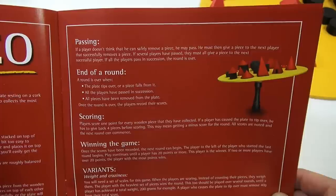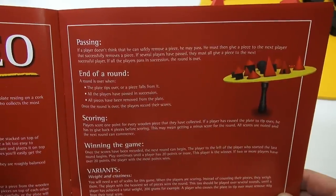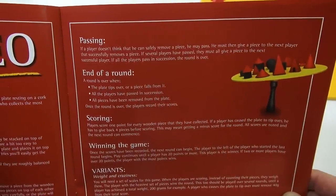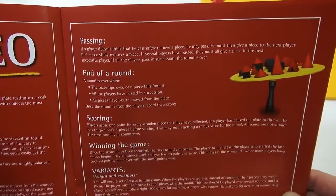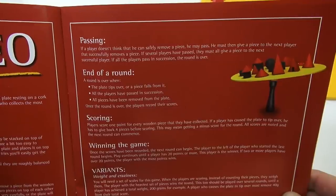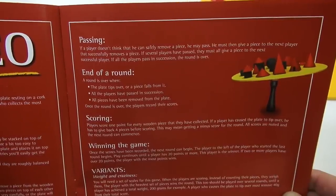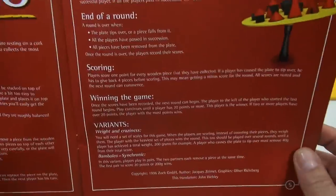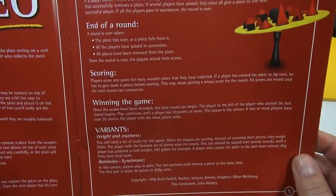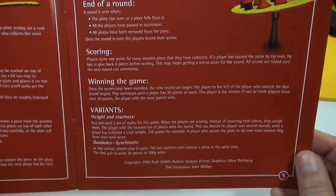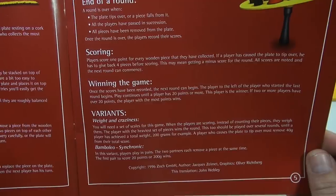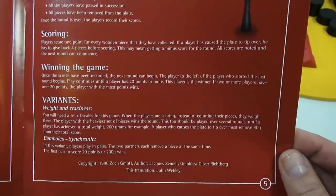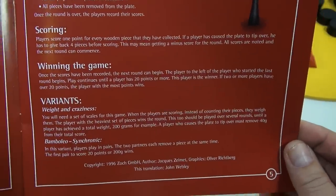End of the round: the round is over if the plate tips over or a piece falls from it, all the players have passed in succession, or all pieces have been removed from the plate. Once the round's over, the players record their scores. The game is up to 20 points. I'll let you read the rest of that and the variants there. You can pause and enlarge that video if you want to read that because I just want to do some balancing act here.